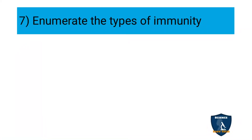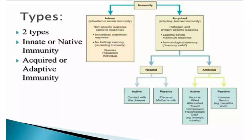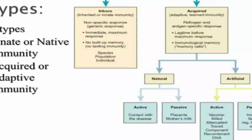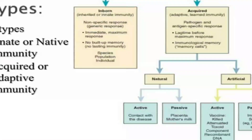The seventh question: enumerate the types of immunity. Under immunity you have two main types: innate or native immunity — which is inborn within the individual — and acquired or adaptive immunity. Under innate immunity you have a non-specific response due to generic responses.